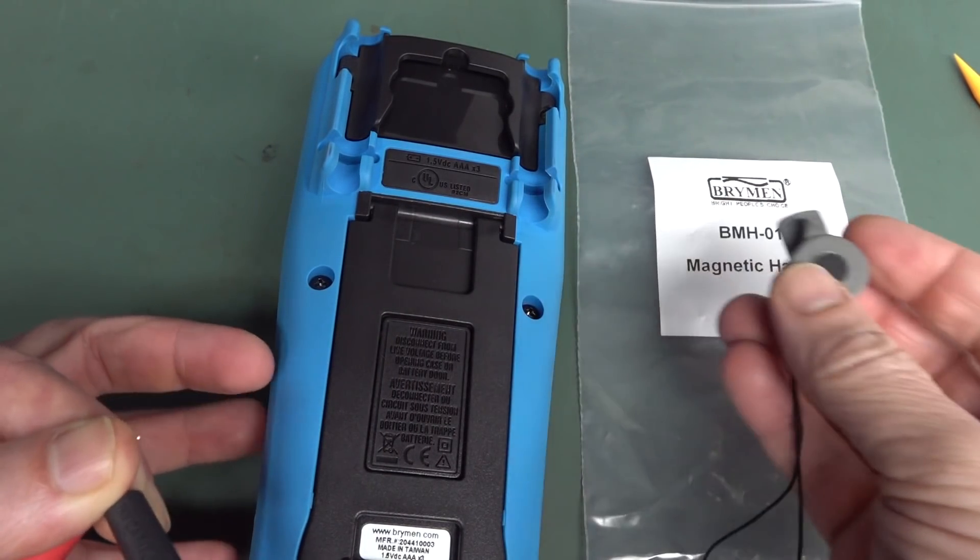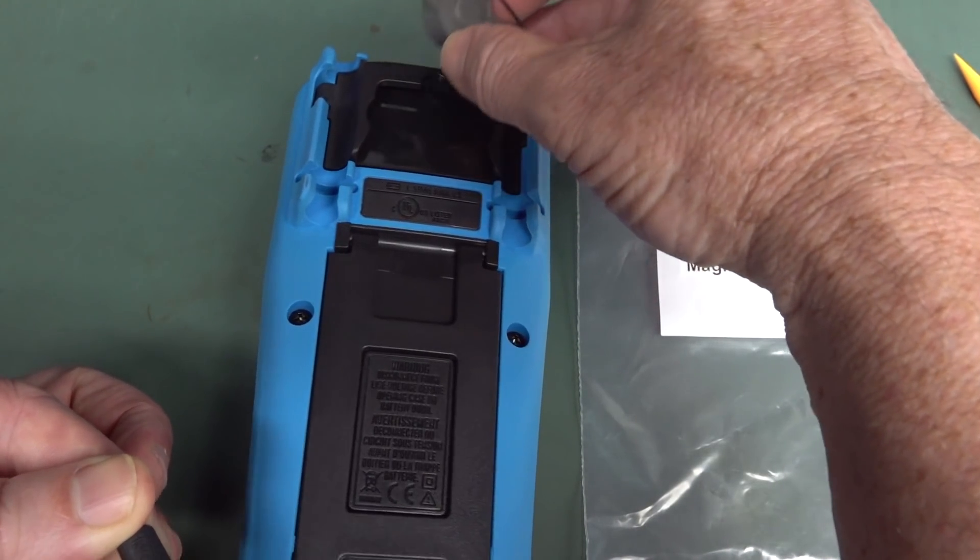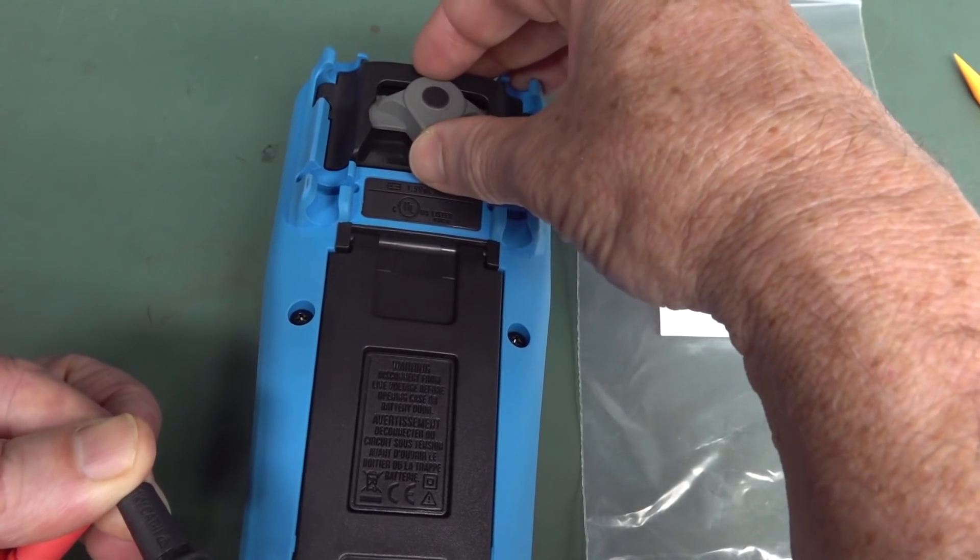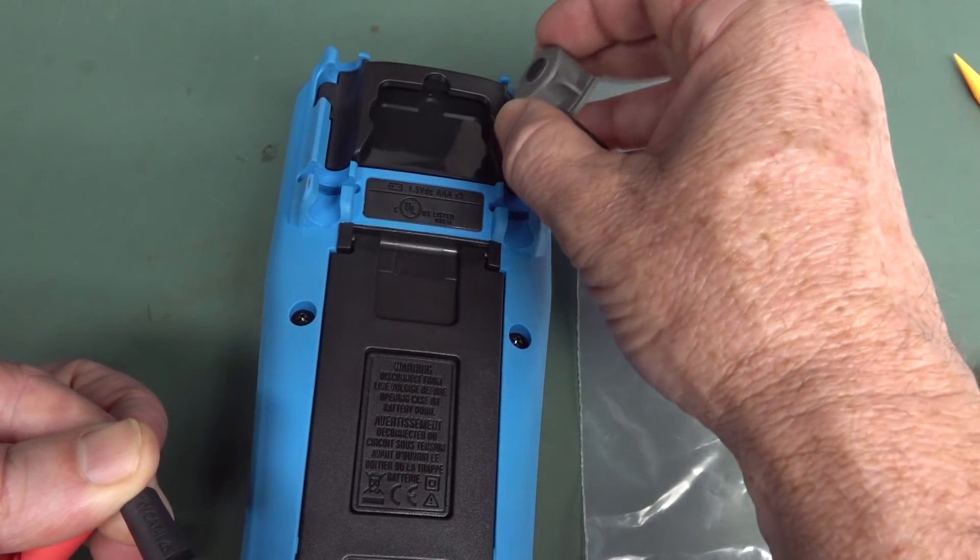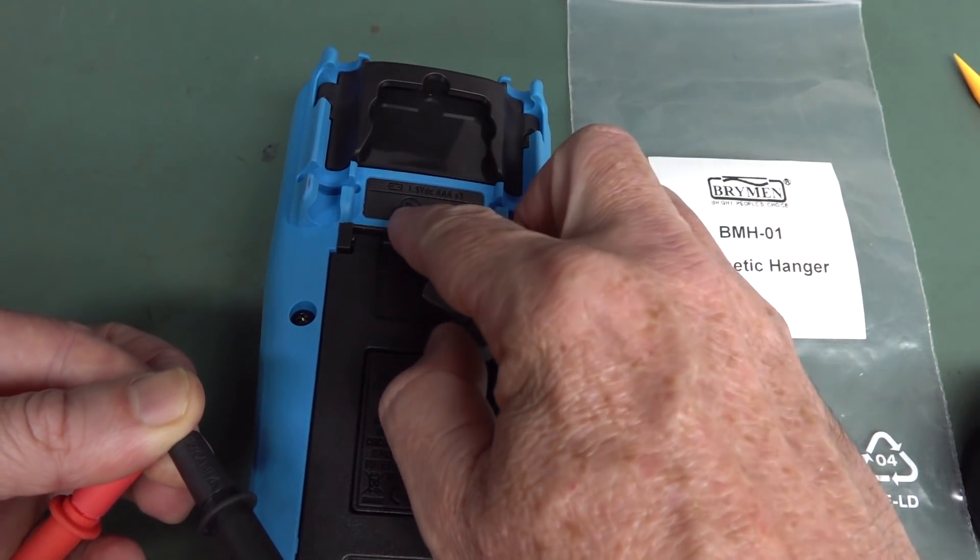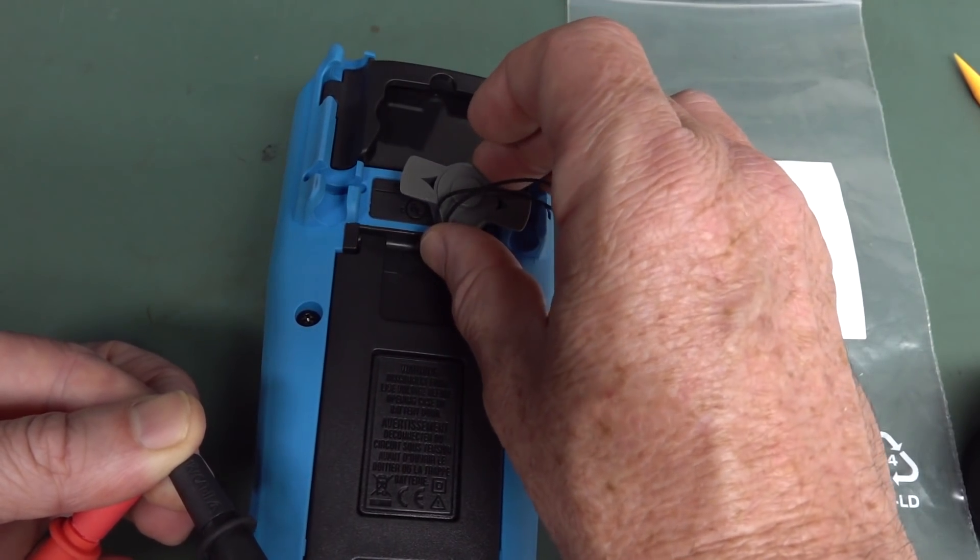Now, if I use the BM235 hanger, if I put it in there, I can sort of hear it drop a tiny little bit, but watch this. Well, listen to this, sorry. Right next to the UL logo there, boom.